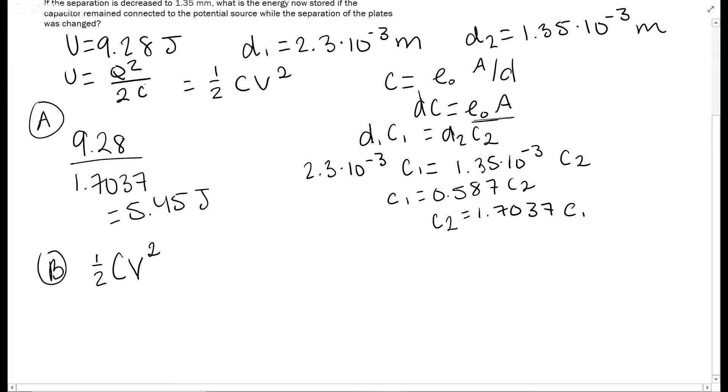So we see that C is now directly related to U, as in it is multiplied. So we're going to take our U. We're going to multiply it by this ratio we made. We're going to get a nice 15.81 joules. And that is our answer for B.